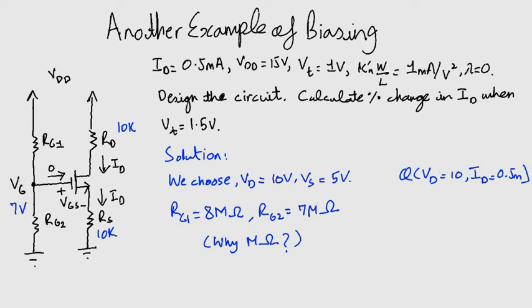The coupling capacitor blocks DC and hence stops the input signal from interfering with the Q-point. But we are not going to go into too much detail right now, but we will do so in later lessons in this same module.